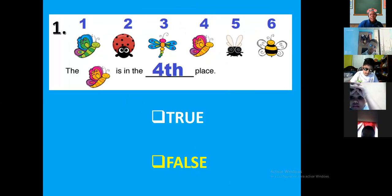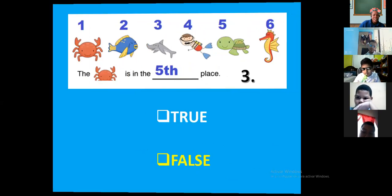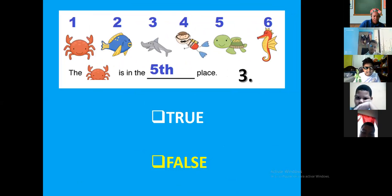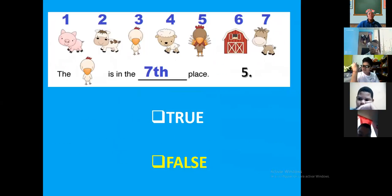And last, the chicken is in the 7th place, true, true or false. The crab is in the 5th place, true or false. Y estas ya las hicimos. All right, guys.